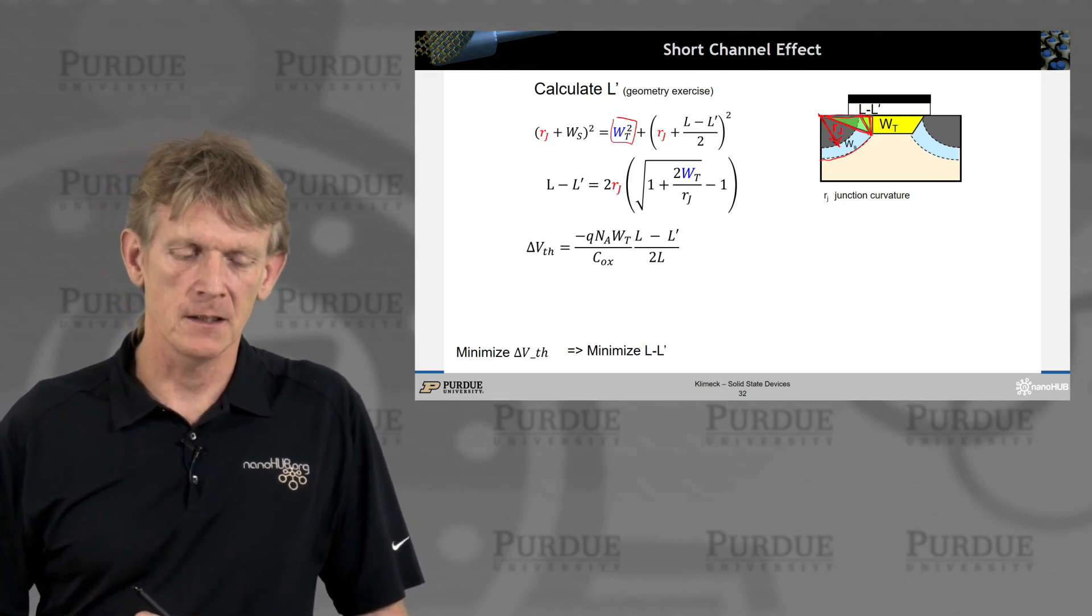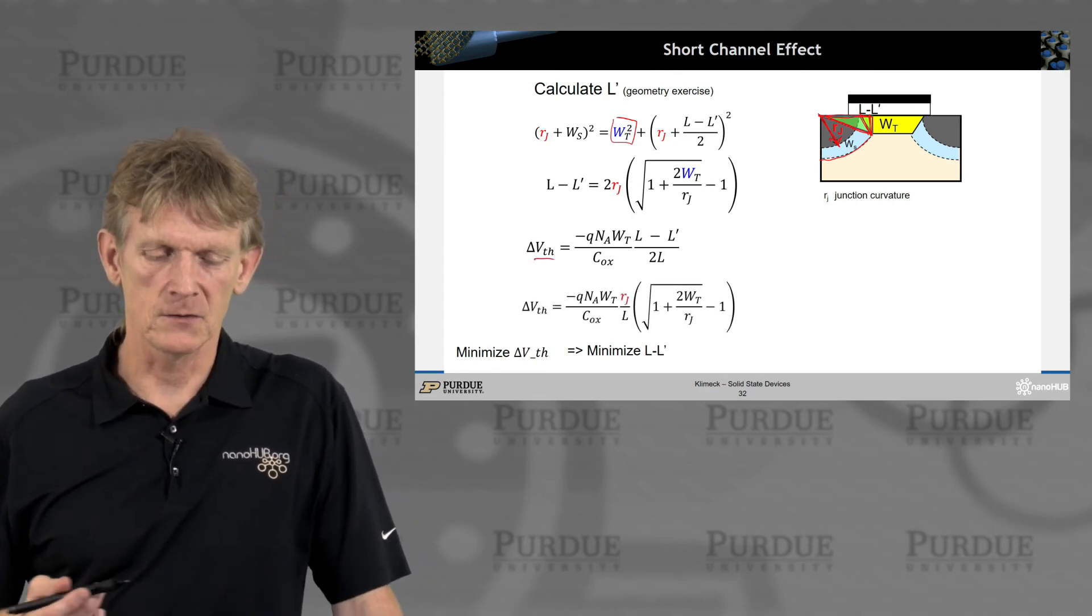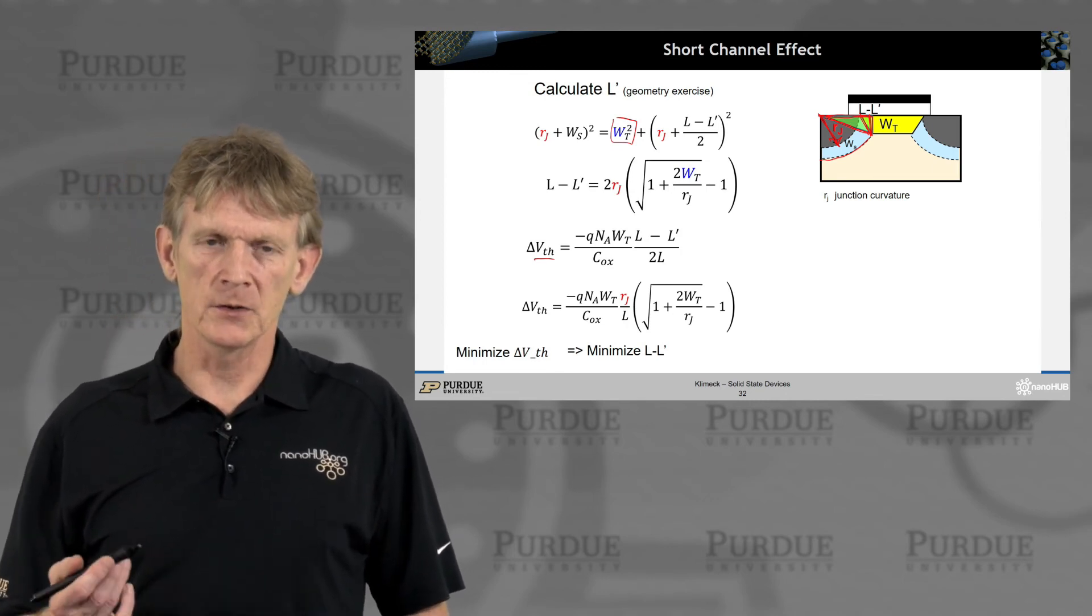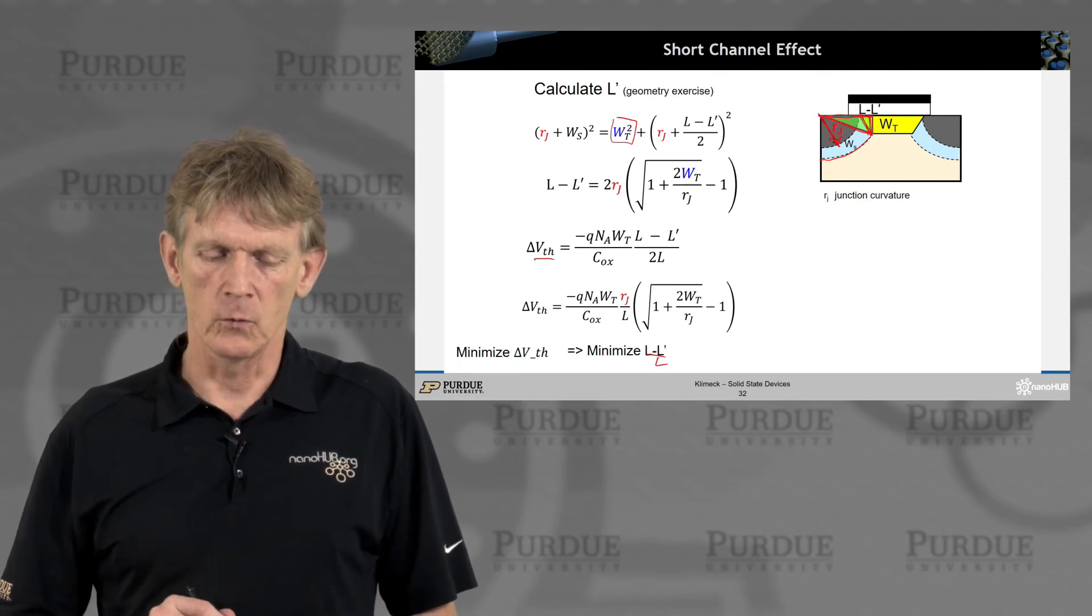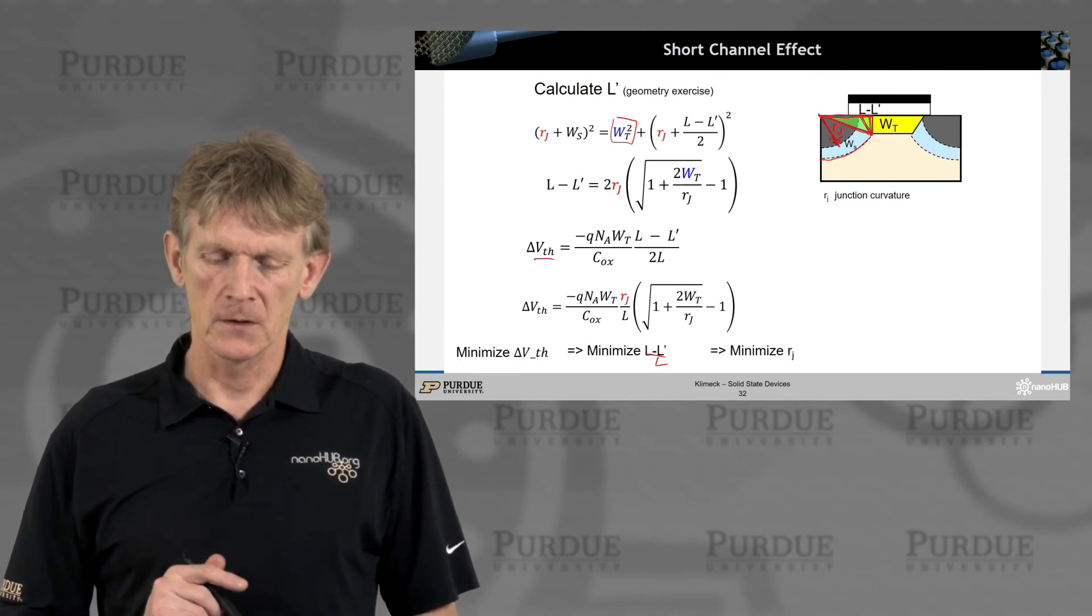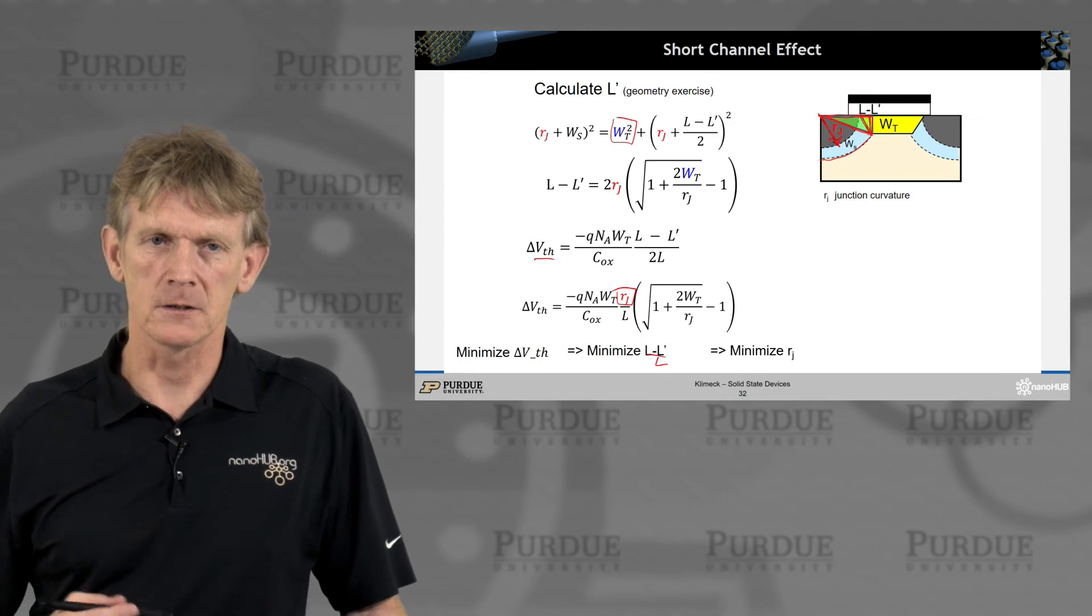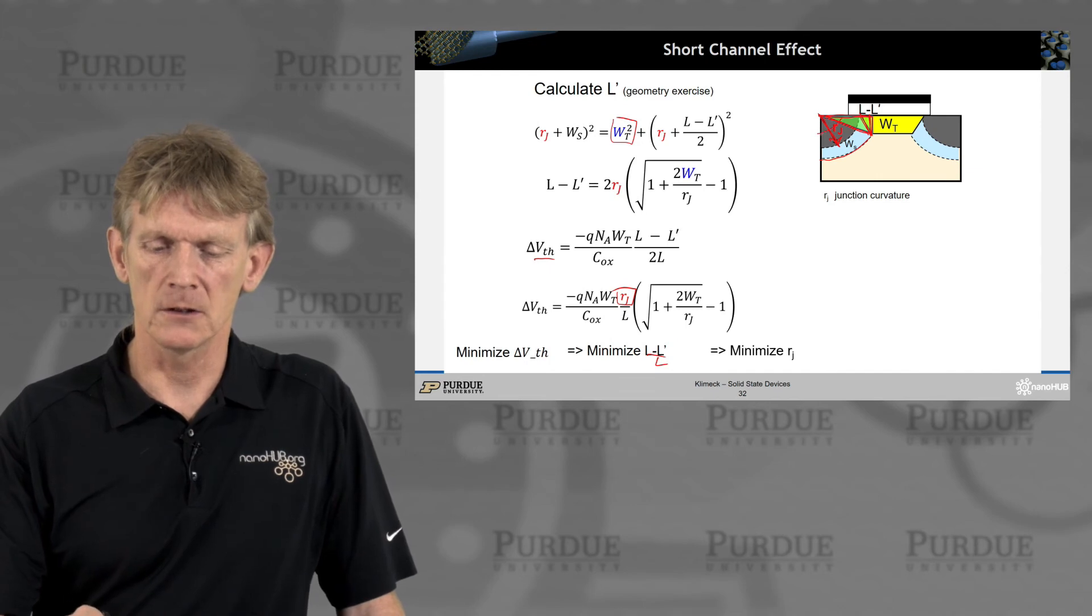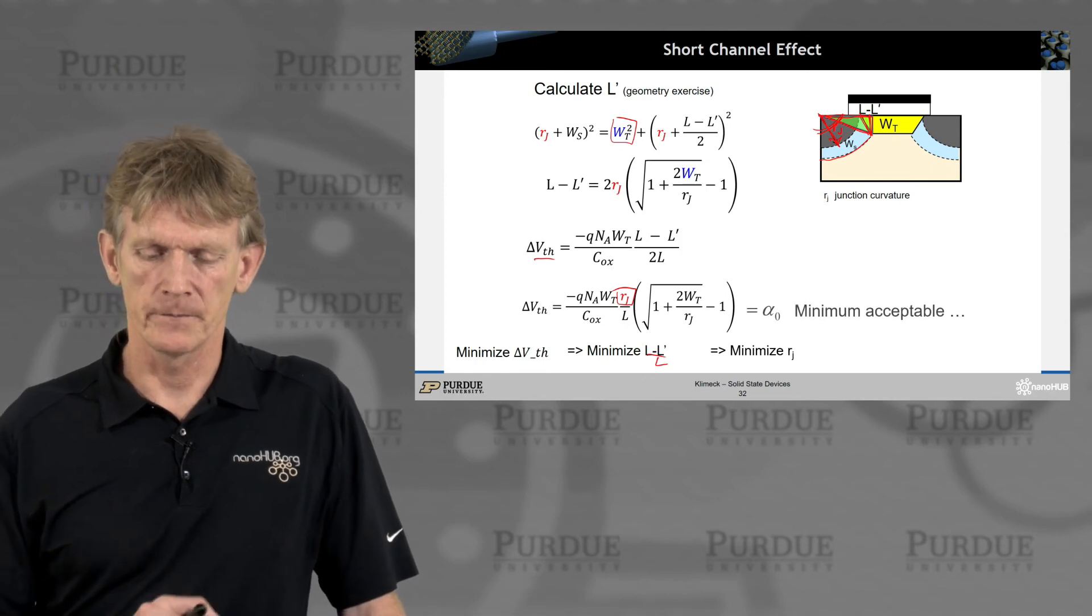If you plug this expression into the change of the threshold, what you find is this longish-looking thing. What does that mean? If you want to minimize the threshold voltage, that means you want to minimize (L - L')/L. What is it you want to minimize? You want to minimize this junction radius. You want very shallow junctions. The smaller you can make this radius, the shallower you can do your doping in the source and the drain, the better off you are.